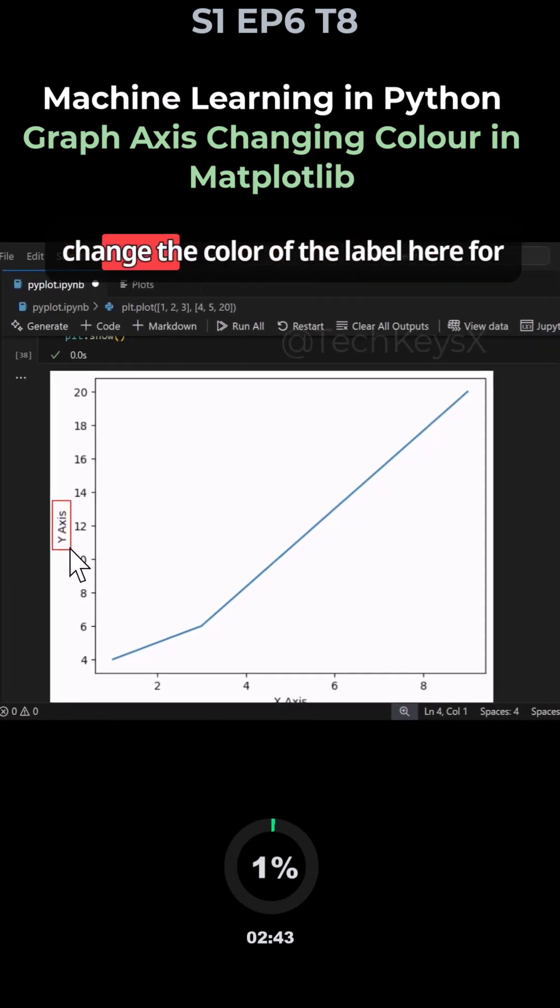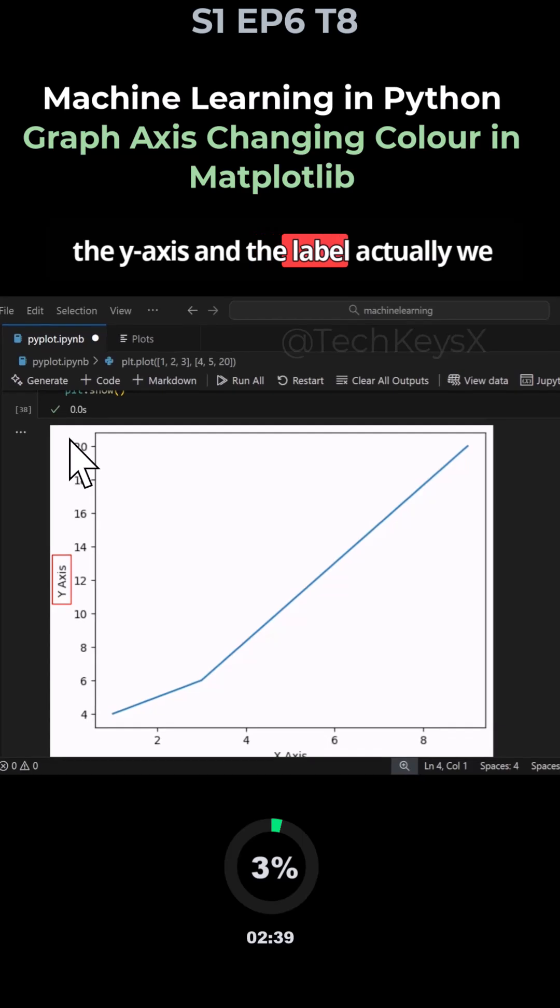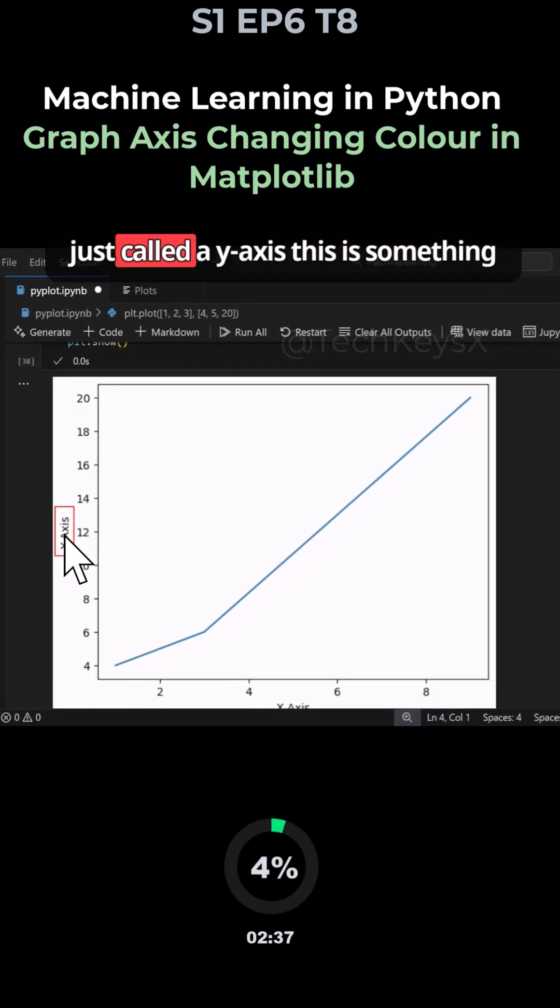So here what we'd like to do is change the color of the label for the y-axis and the label actually we just called the y-axis.